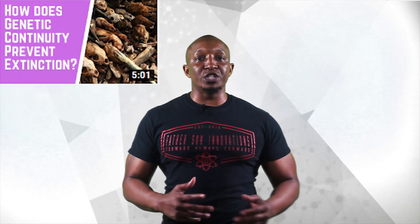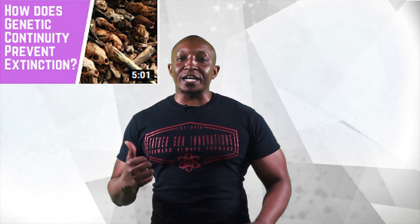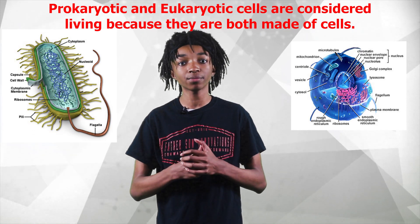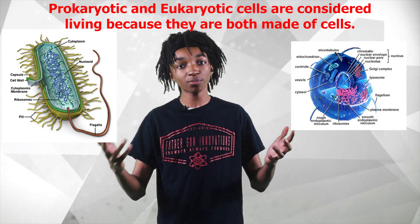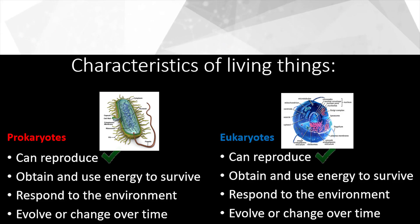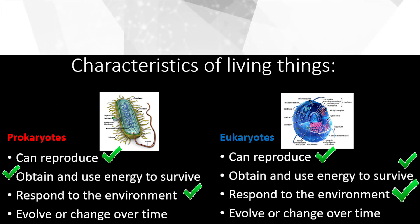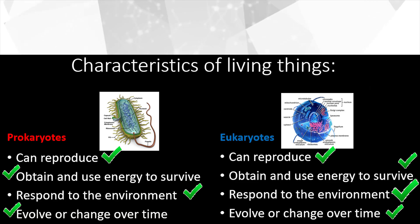We discussed this in our genetic continuity video, so go check it out. Second, prokaryotic and eukaryotic cells are both considered living — the most obvious reason being they're both made of cells. Third, both types of cells contain the characteristics of living things: they both can reproduce, both have to obtain and use energy to survive, both can respond and adapt to the environment, and both evolve or change over time.